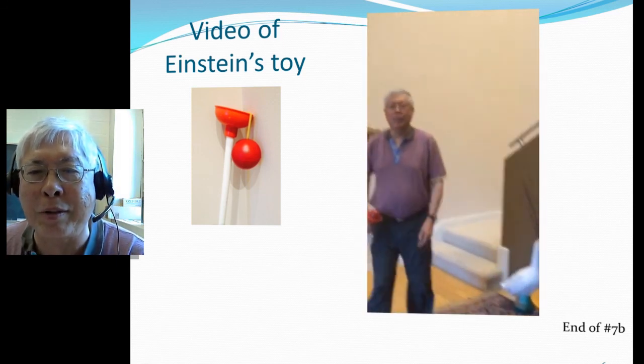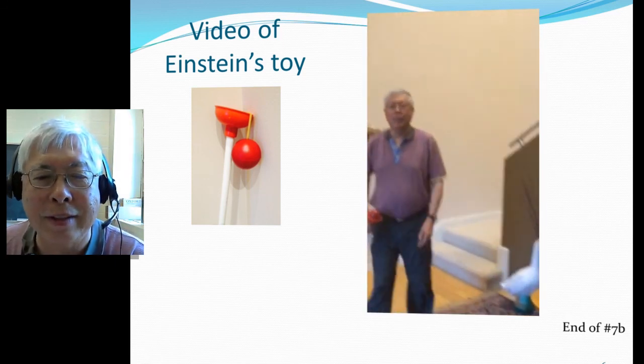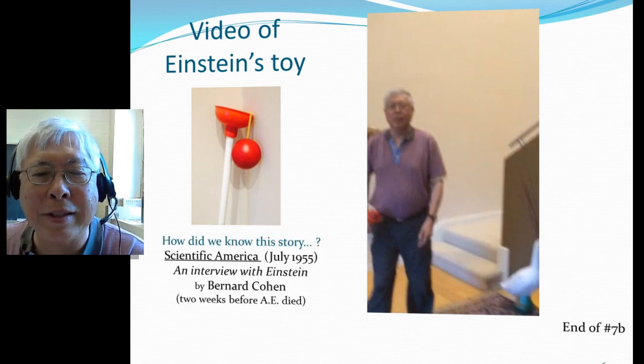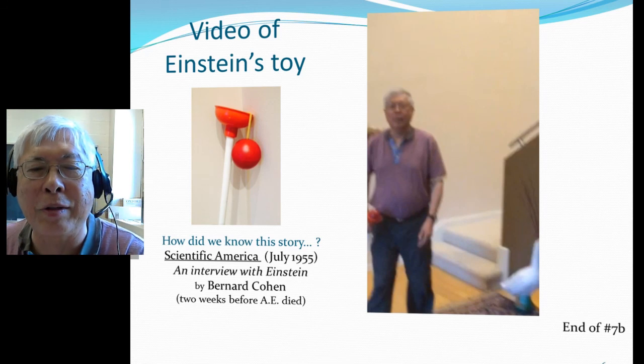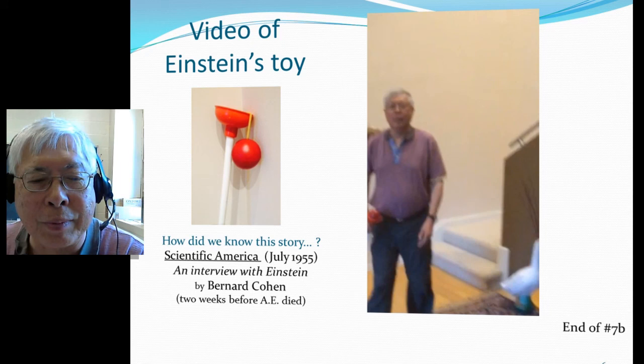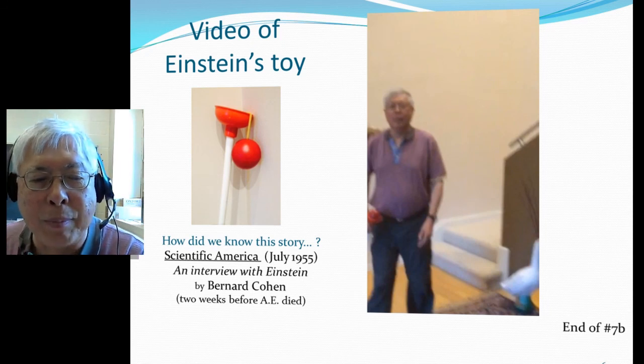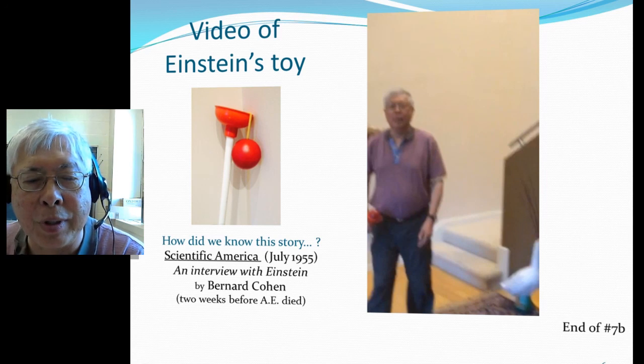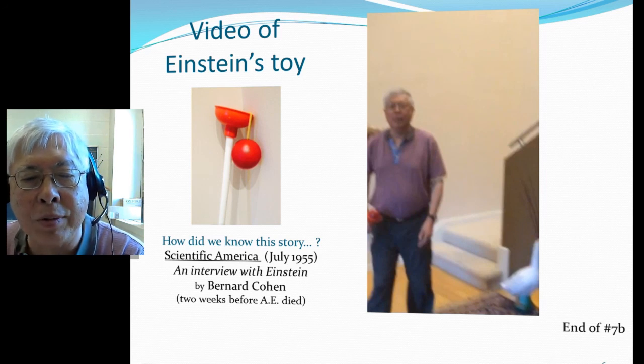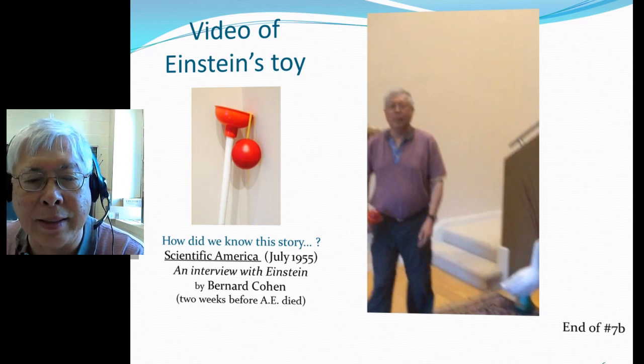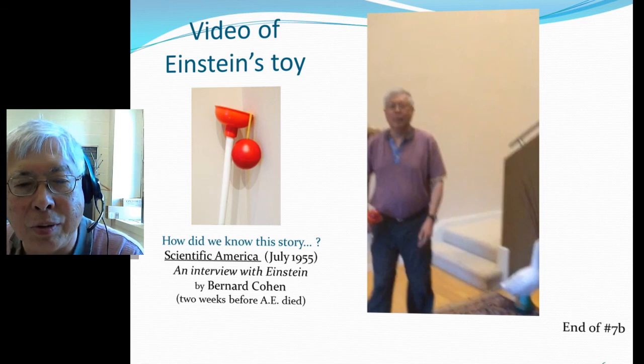So how do we know that Einstein got this for his 76th birthday? Well, because there was an article written in Scientific American by a historian of science, Bernard Cohen, who actually interviewed Einstein just two weeks before Einstein died in 1955.